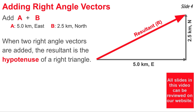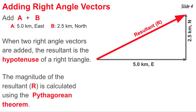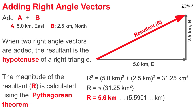Because the resultant is the hypotenuse of a right triangle, we can apply right triangle mathematics to determine its magnitude and direction. For magnitude, we use the Pythagorean theorem: a squared plus b squared equals c squared, where c is the resultant. Applying it here, R squared equals 5 squared plus 2.5 squared, which comes to 31.25 kilometers squared. Taking the square root gives R equals the square root of 31.25, which is approximately 5.6 kilometers.